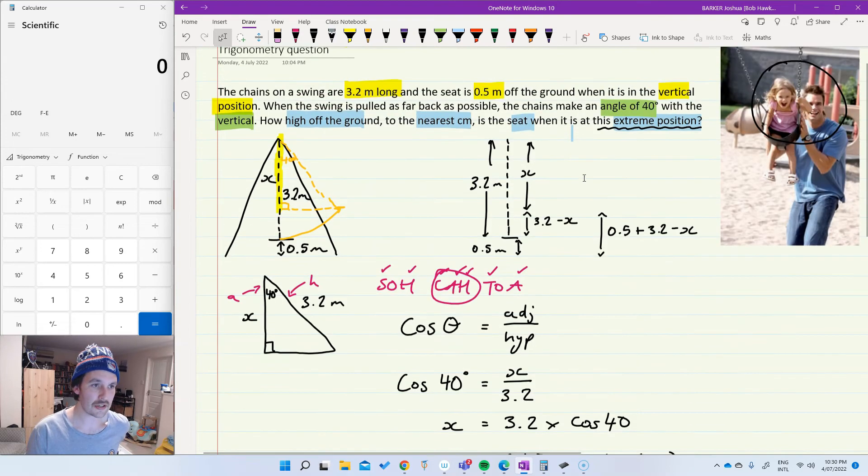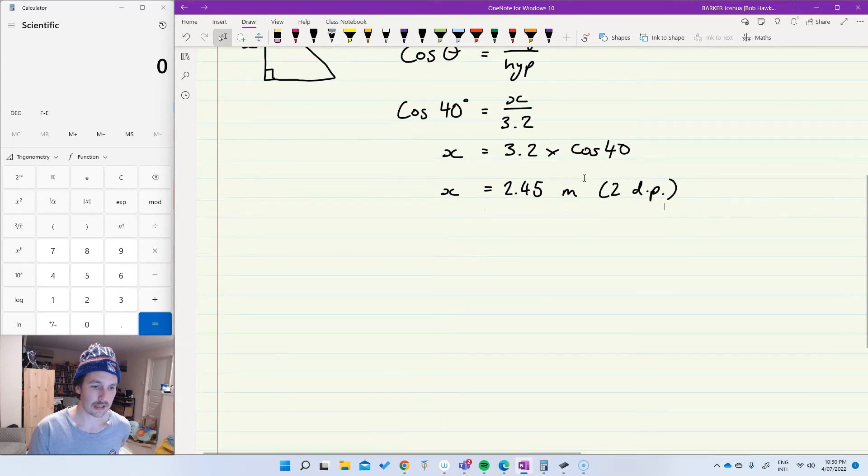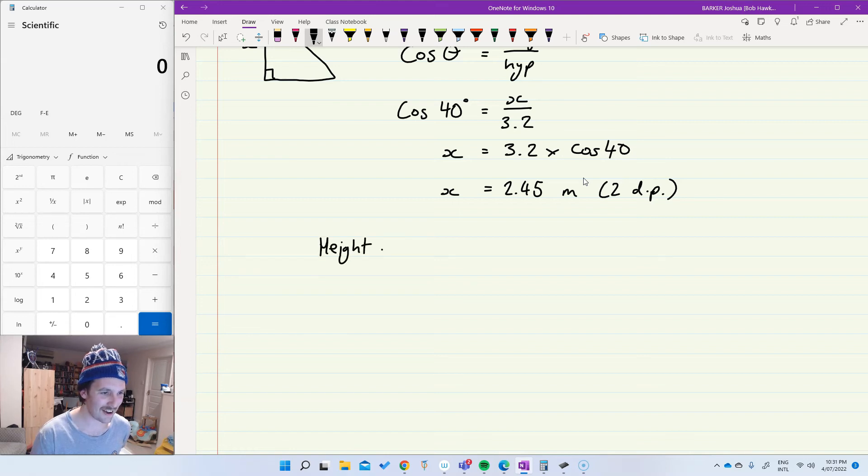Now, using the diagram, I can start to formulate my answer. I'm going to, because I really like the phrase extreme position, I'm going to say height at extreme position, and I've already figured out that that's going to be 0.5. So that's the height that it already was above the ground, plus the length of the chain 3.2. I'm pretty sure. Yep.